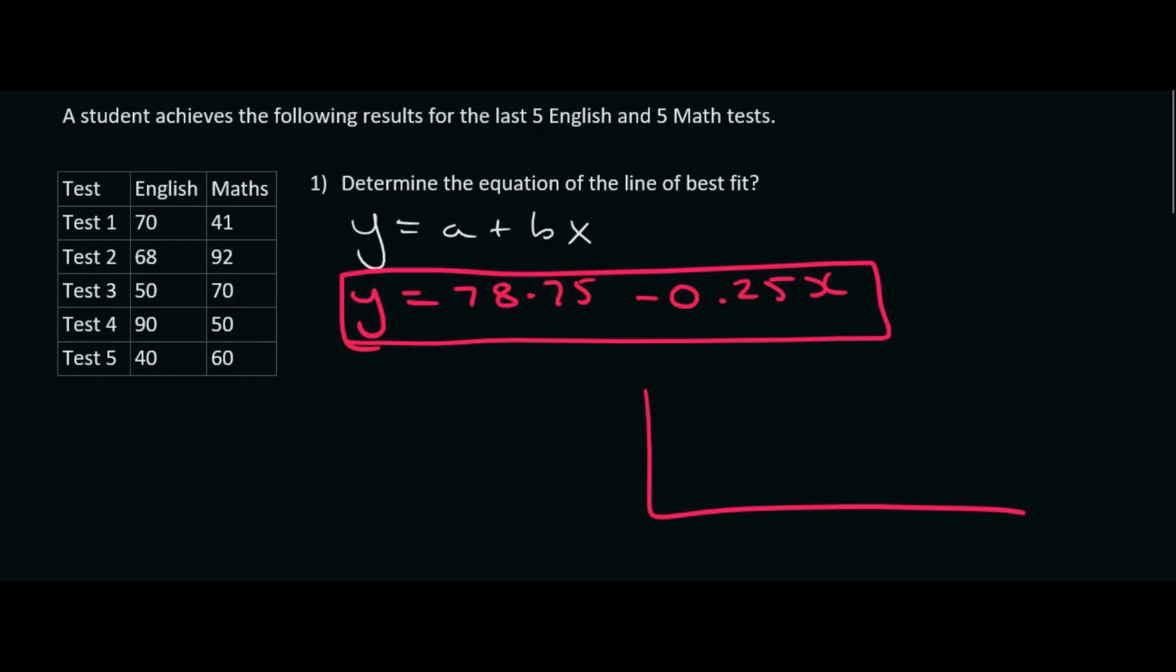What that means is that if you plotted all your values, I've got no idea what it would look like. But if you had to, what the calculator has now done is it's found a line that gets as close to the dots as possible. So it tries to get as close to each of them as possible. And this is the equation of that line.